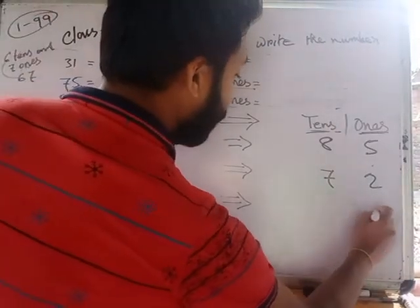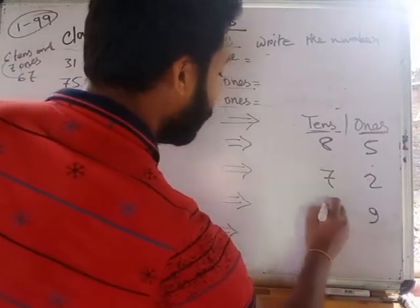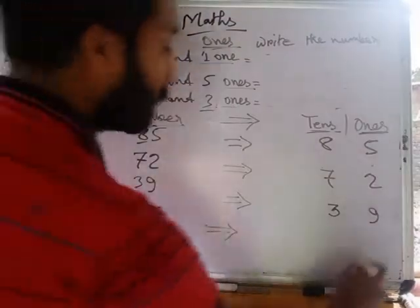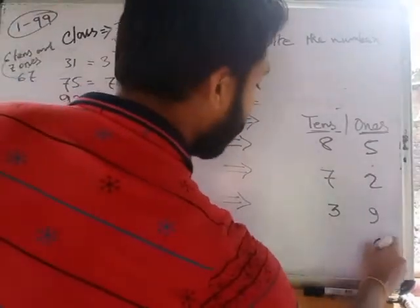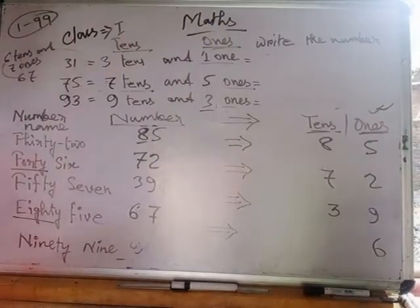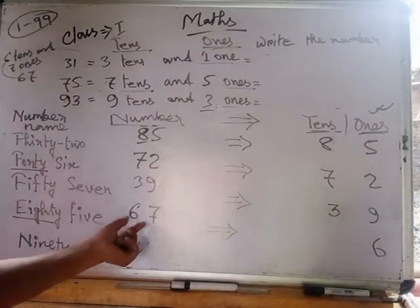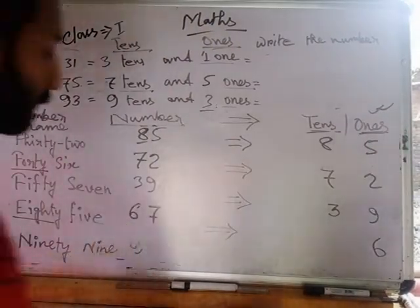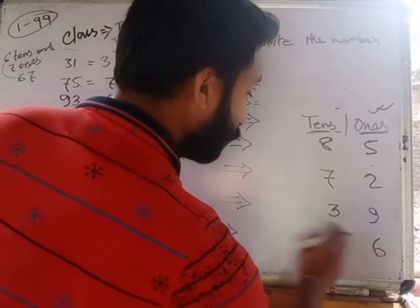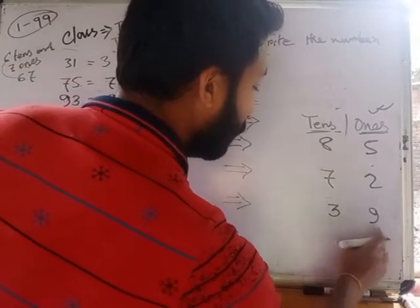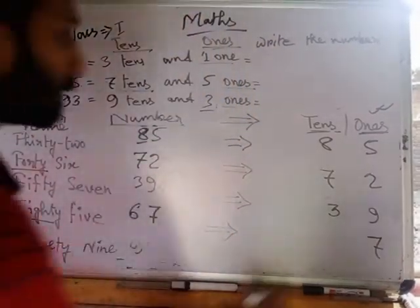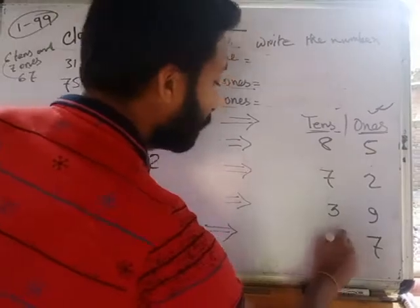For 39: 9 is at the place of ones, so we write 9 there, and 3 is at the place of tens, so we write 3 there. For 67: 7 ones, so we write 7 at the place of ones, and 6 is at the place of tens, so we write 6 there.